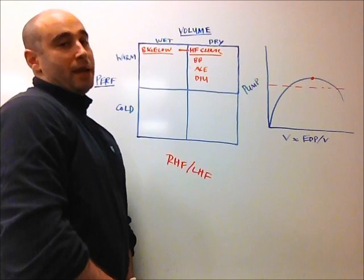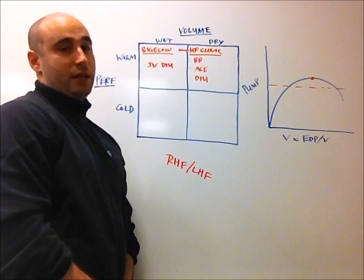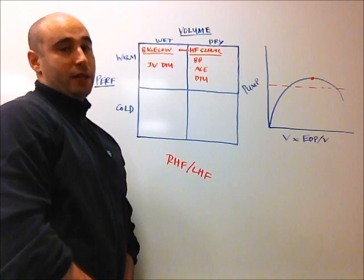So the mainstay of this person's therapy when they get to the medical floor is IV diuresis. IV diuresis is important for three reasons. First, IV diuretics are generally more potent than PO diuretics. For Lasix, we think of a 2 to 1 ratio of IV to PO.